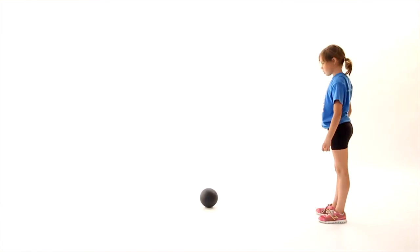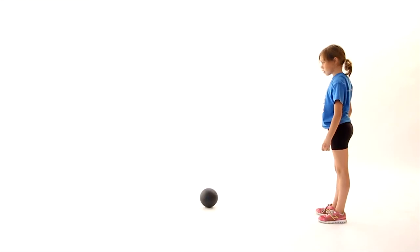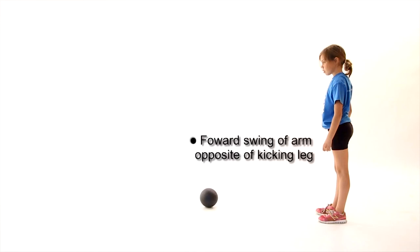Abby demonstrates an accomplished level of kicking by conducting the following. Her eyes are focused on the ball throughout the kick. There is a forward swing of the arm opposite of the kicking leg.